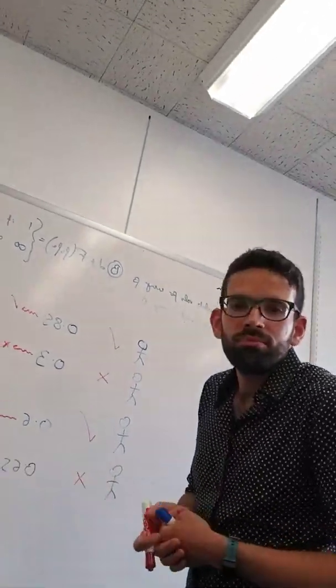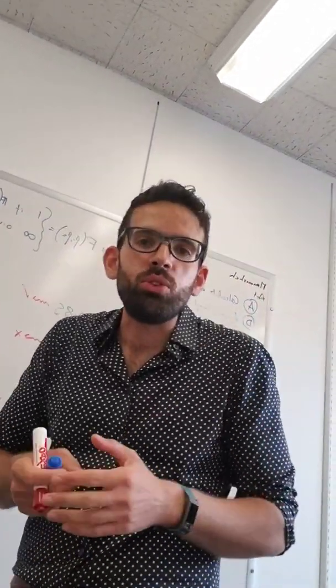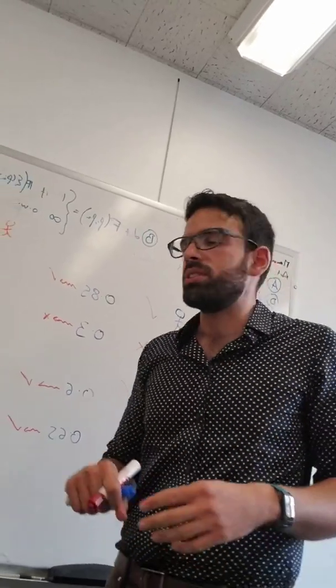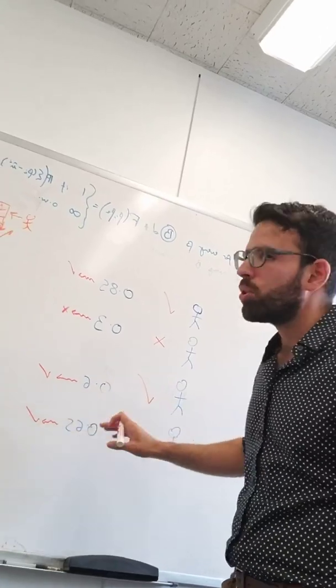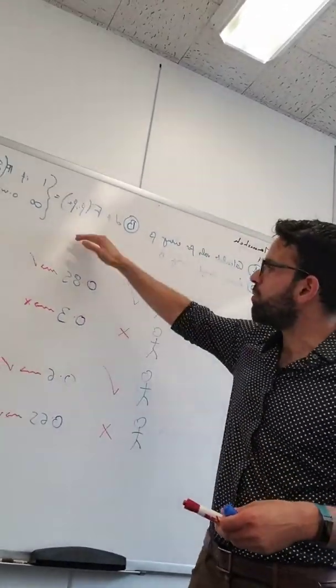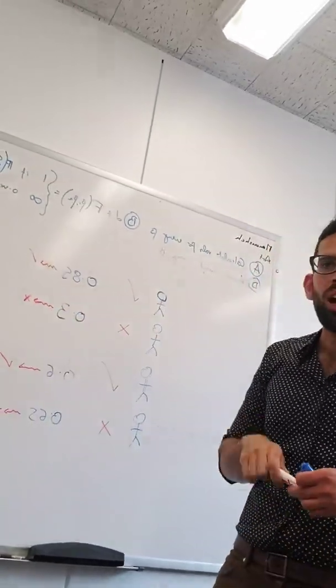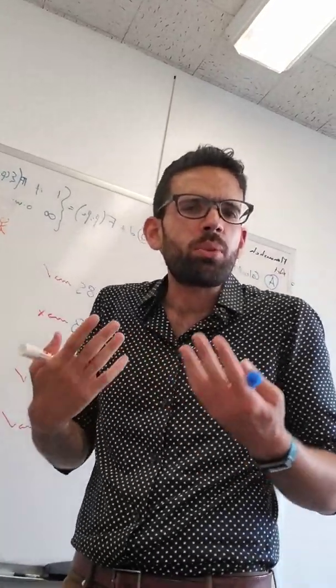Why is accuracy not the be-all and end-all? Why do we need to look further than the accuracy? Here's the problem. We've made the assumption here that 0.5 is the right threshold to use. We've made the assumption that above 0.5 we predict a yes, below 0.5 we predict a no. But that's not always the right choice.